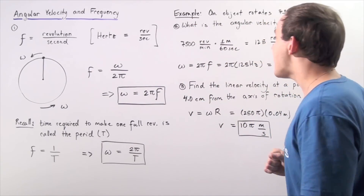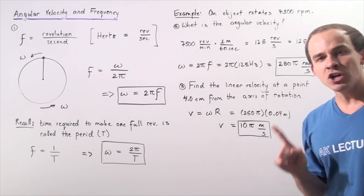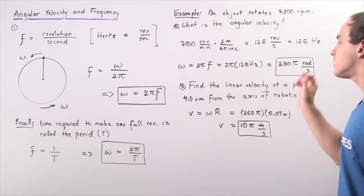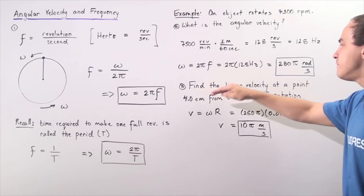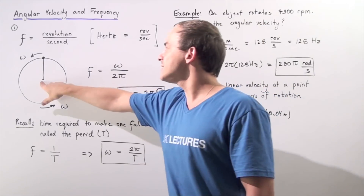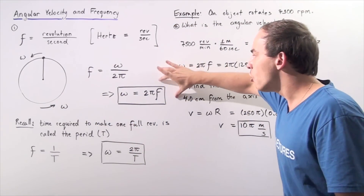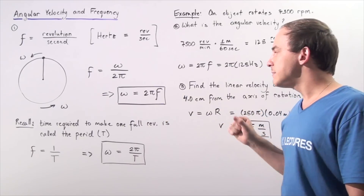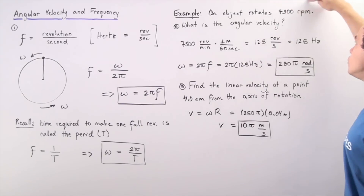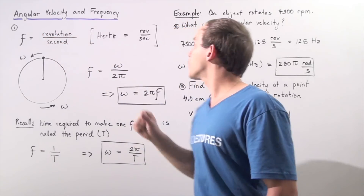Let's look at an example. An object rotates at 7500 revolutions per minute. In part A we want to calculate the angular velocity, and in part B we want to find the linear velocity at a point four centimeters from the axis of rotation. Before applying our formula, we have to convert revolutions per minute to revolutions per second, because frequency has units of revolutions per second.